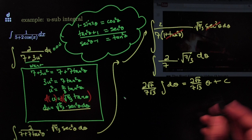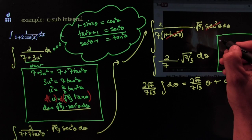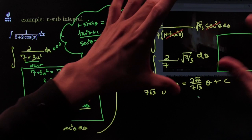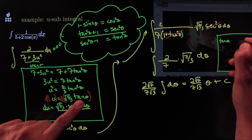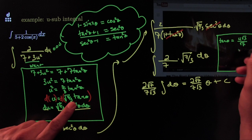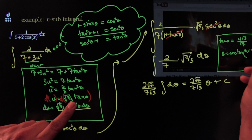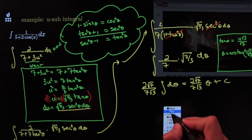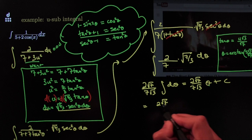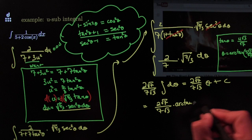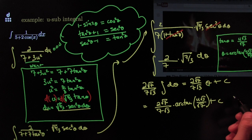Now I go back to the dictionary to find θ. From the substitution, tangent θ equals u times square root of 3 over square root of 7, so theta equals arctan of (u times square root of 3 over square root of 7). Plugging that in, my next answer is 2 times square root of 7 over (7 times square root of 3) times arctan of (u times square root of 3 over square root of 7) plus C.